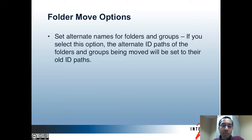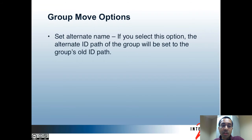When you move a folder, you can specify whether the folder and its groups and subfolders will have alternate ID paths set. The alternate ID path of the folder and its groups and subfolders would end up being the old ID path. This could potentially make it easier for systems to continue to find the objects using their old names and provide a way to transition from one set of names to another. When you move a single group, you also have an option of setting the alternate ID path of the group to its old ID path for the same reason.